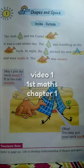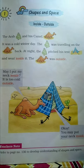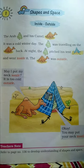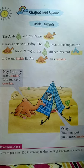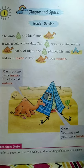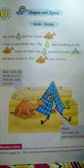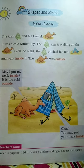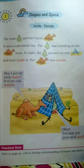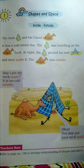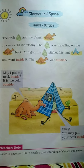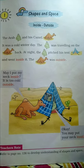This is Chapter 1, Shapes and Space. Our topic is Inside, Outside. So now let's read out the story: The Arab and his camel.